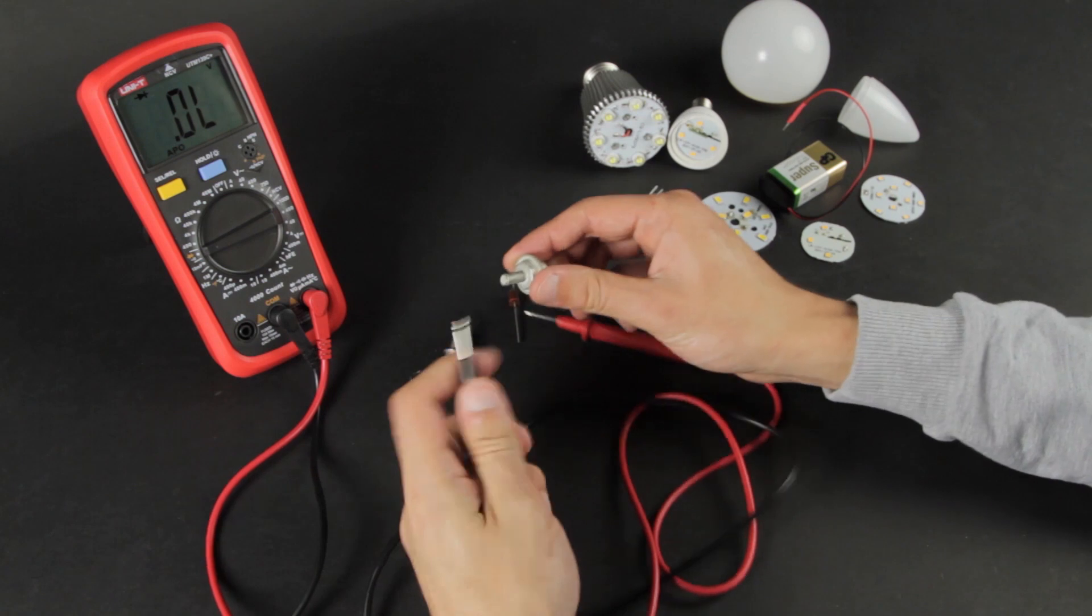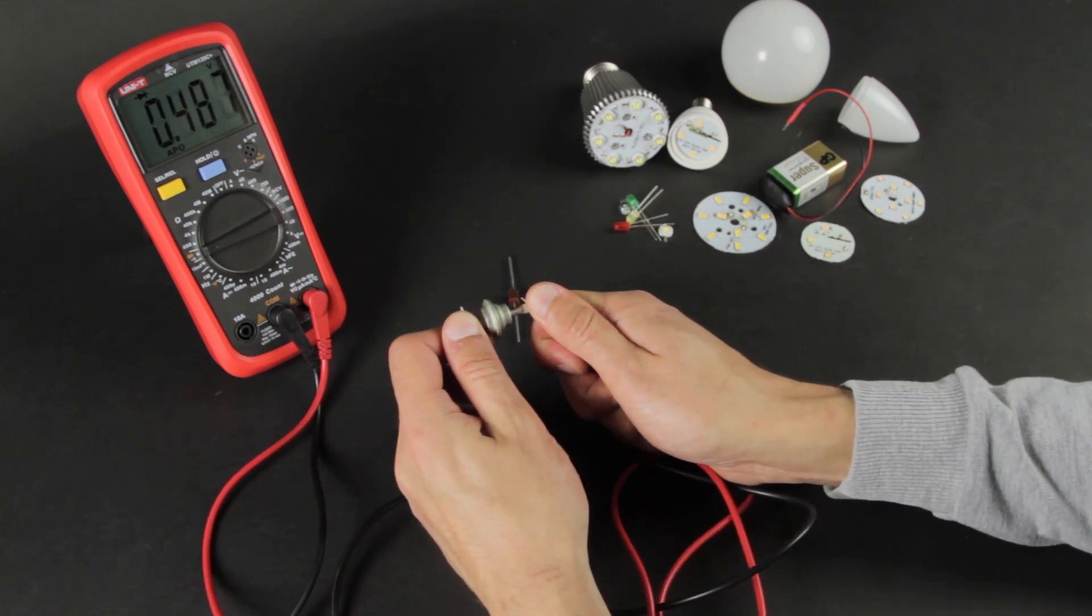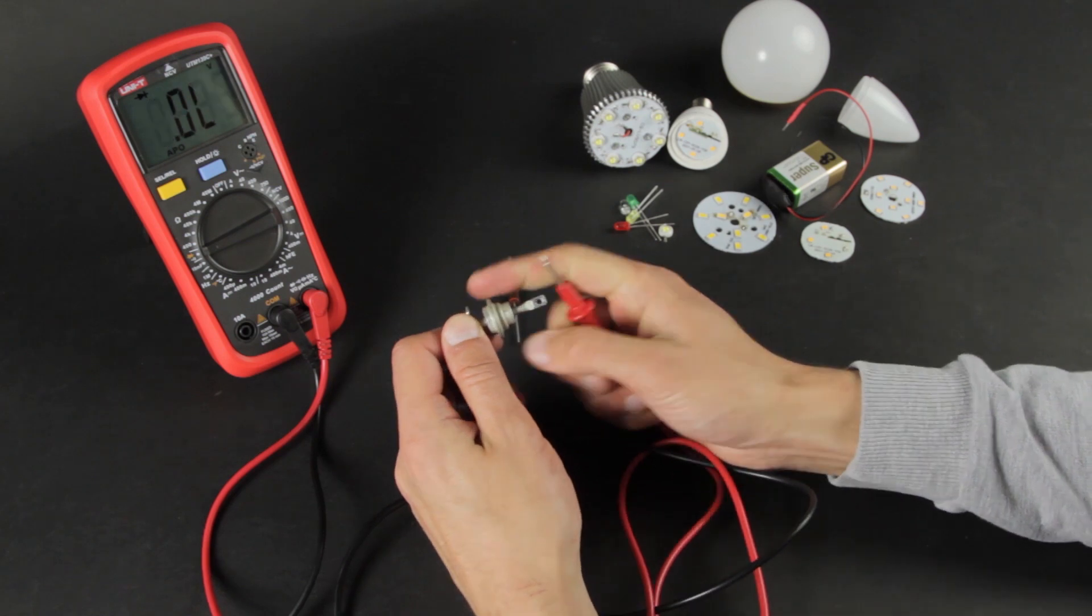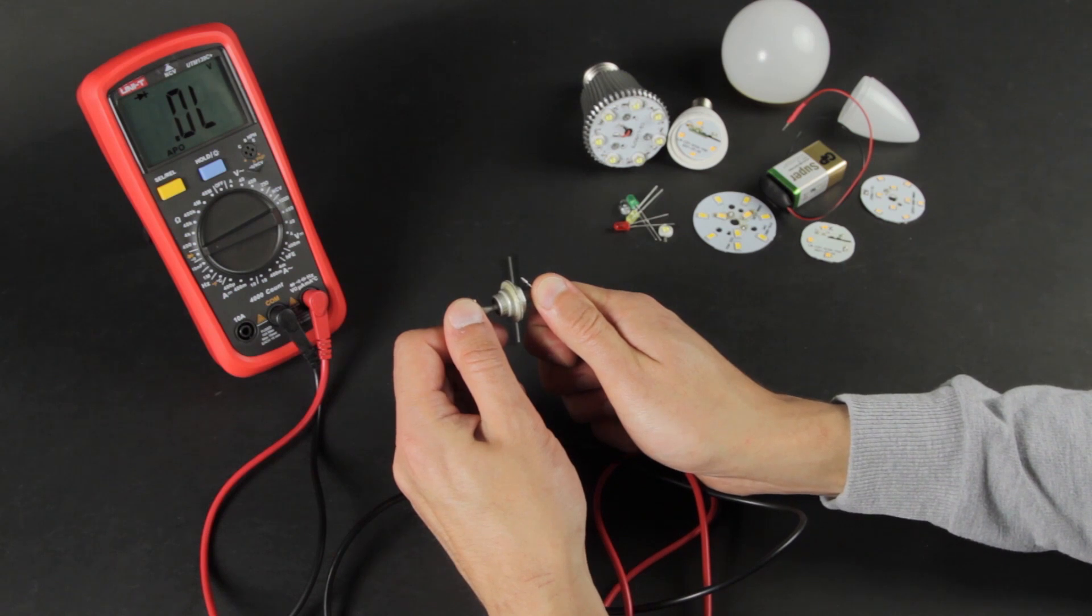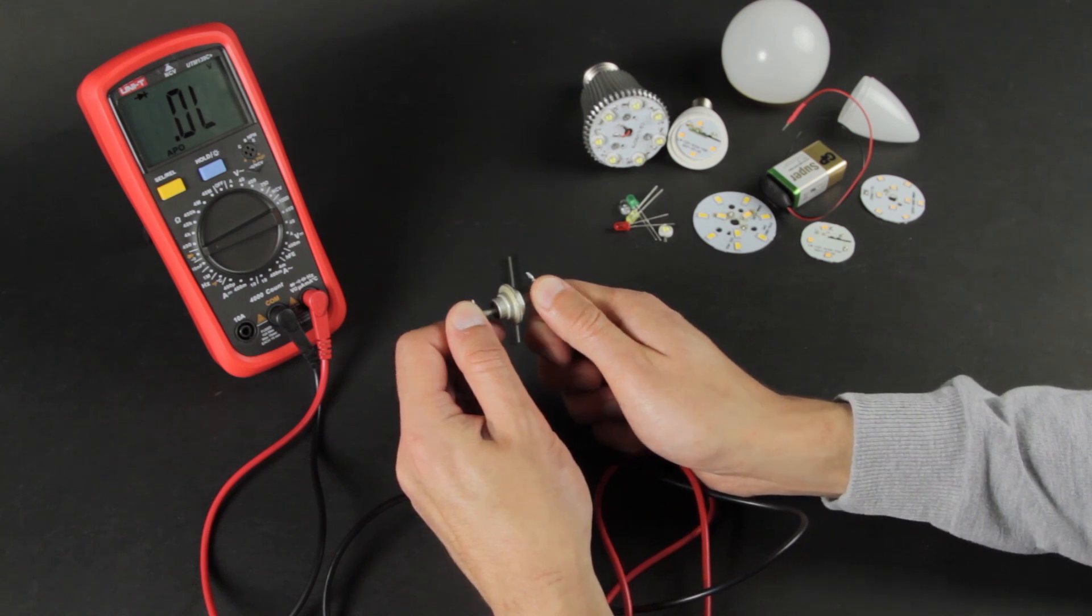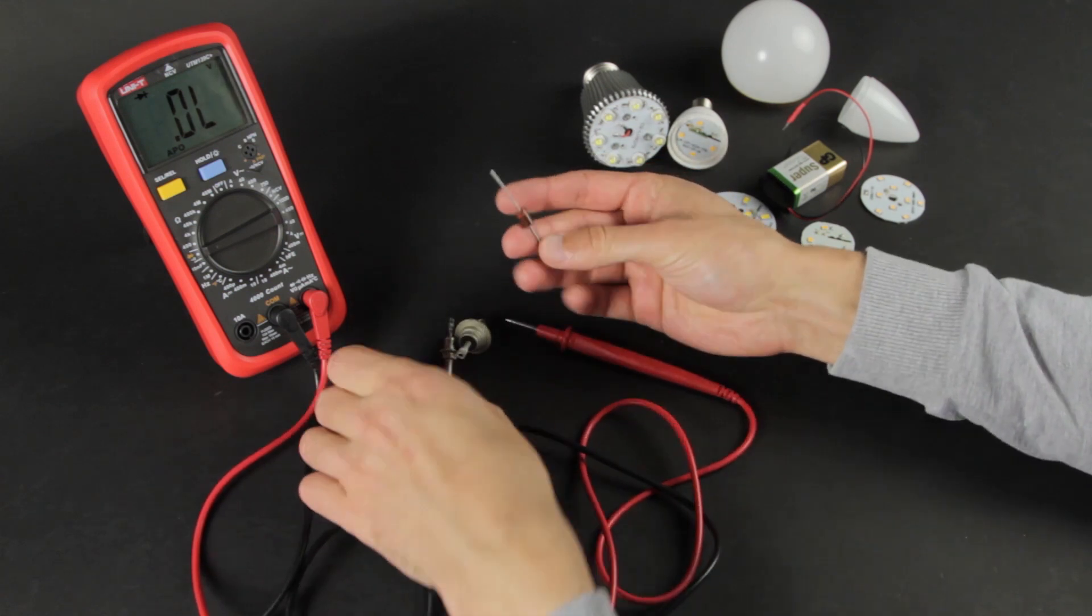Now take the diode. Attach the negative probe to the cathode and the positive to the anode. The display shows a voltage drop on the diode – 485 millivolts. We change the probes and the meter shows nothing. It means no current is running through a diode. That's how it should be – the diode is ok.